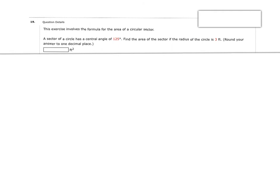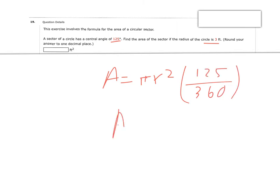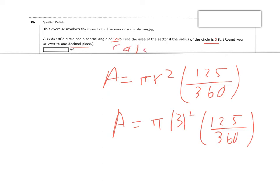Next: area of a sector with central angle 125 degrees and radius 3 feet. Area equals pi r squared times 125 over 360. With radius 3, that's 9 pi times 125 over 360. It says to round to one decimal place, so I'll use the calculator: 9 times pi times 125 divided by 360 gives approximately 9.8 square feet.